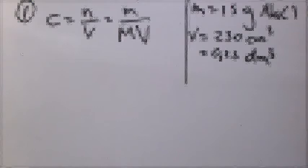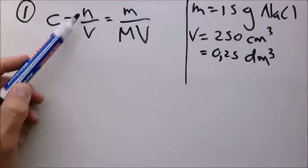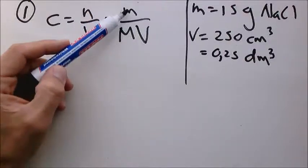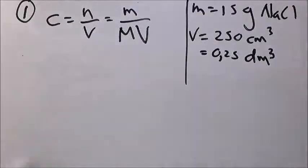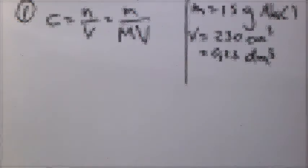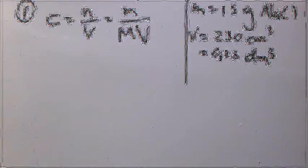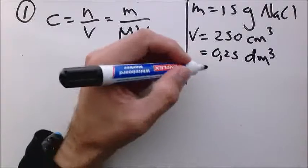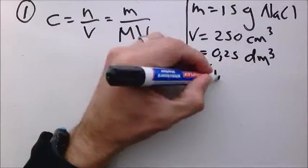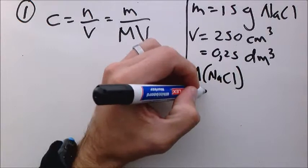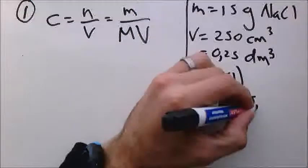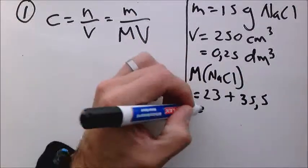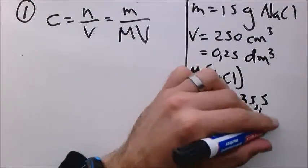We need to calculate the concentration, but looking at our formula we don't have the moles — we can calculate them but it's the long way around. We have the mass and the volume. Can we get the molar mass? Yes we can. We look at our periodic table and calculate the molar mass of each element. Sodium is 23 grams per mole and chlorine is 35.5 grams per mole. So the molar mass will be equal to 23 plus 35.5, which is 58.5 grams per mole.